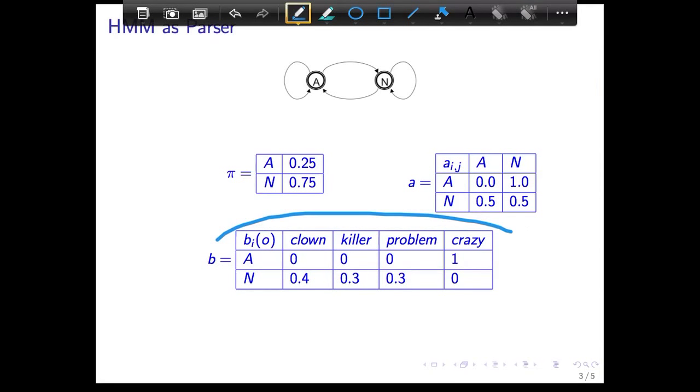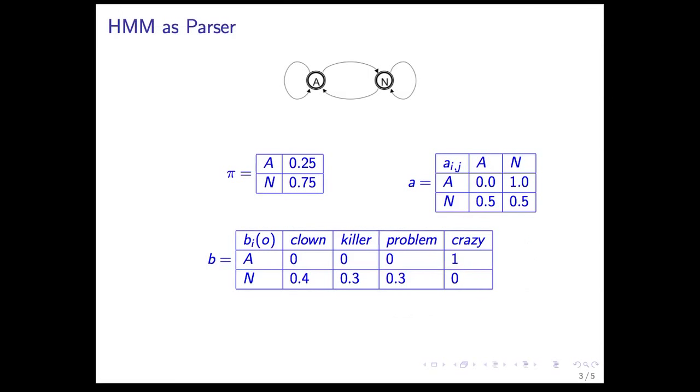And then finally, there's the observation emission probability. And for each state, in this case A, you get a distribution over how it can generate the words in the vocabulary. And HMM is entirely defined by these tables.